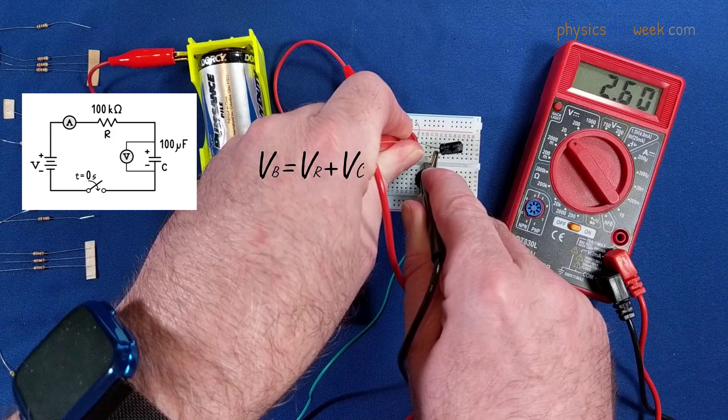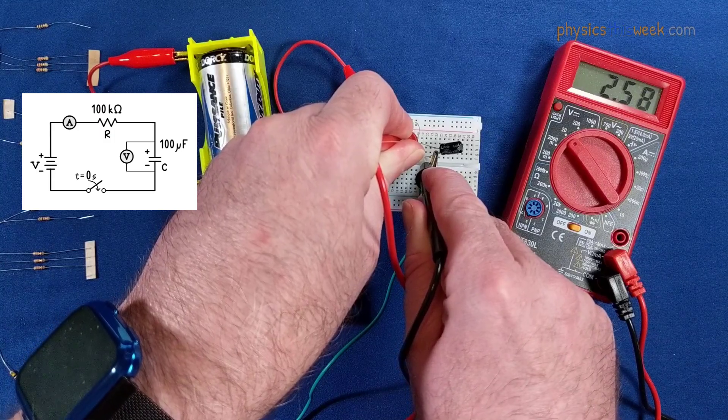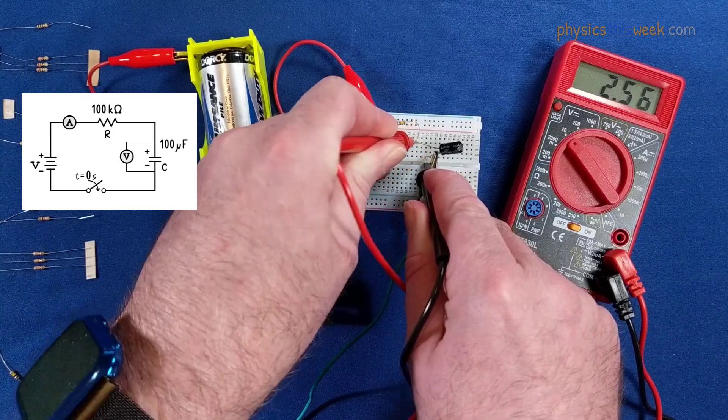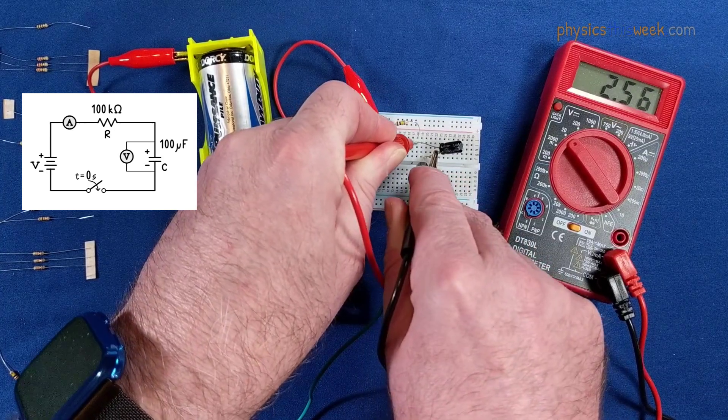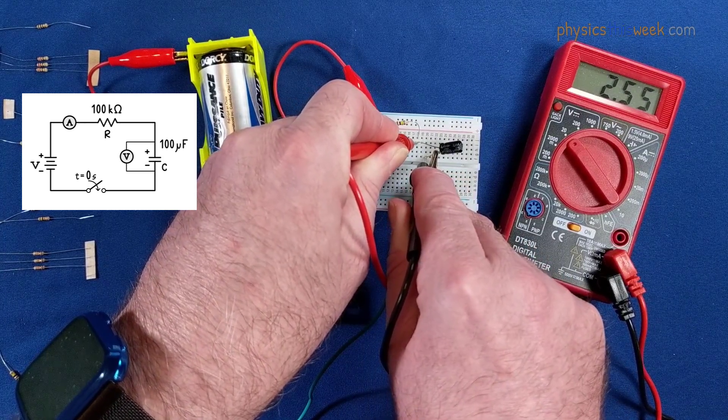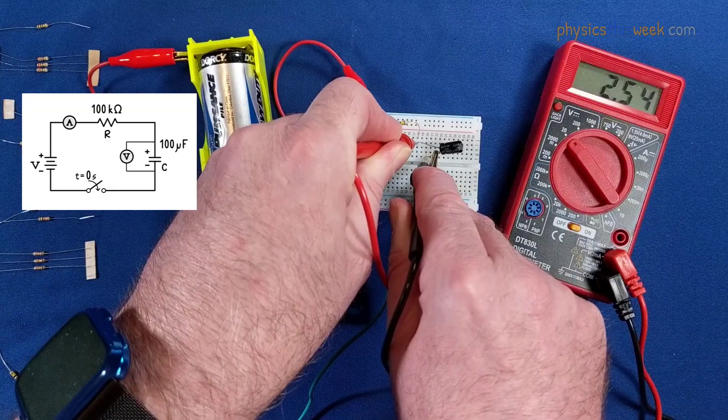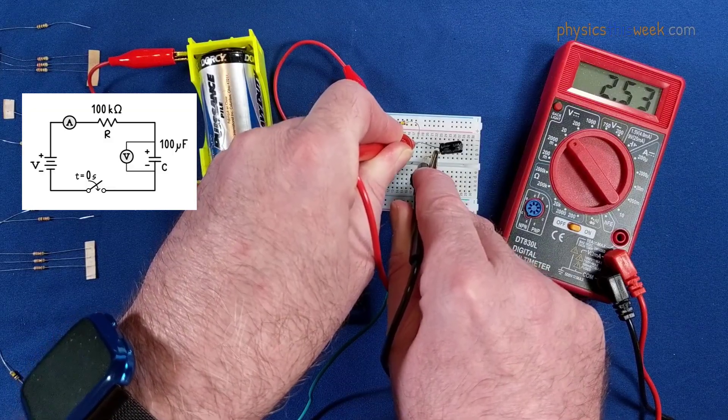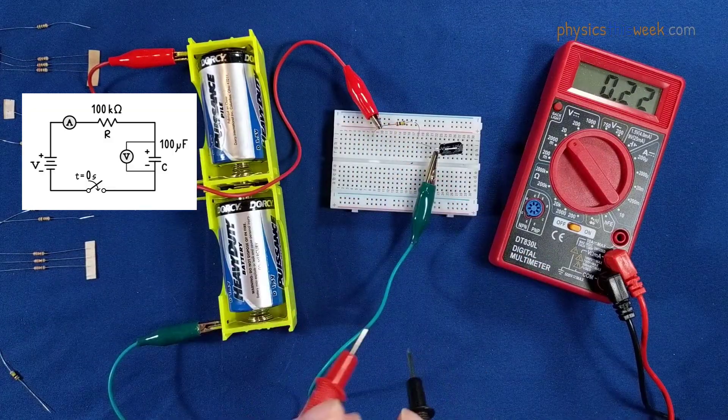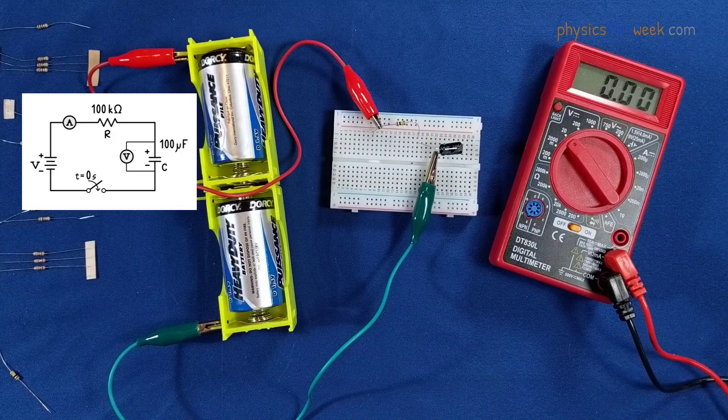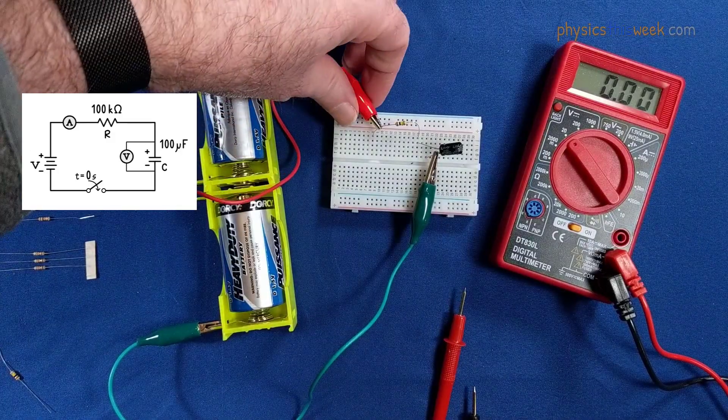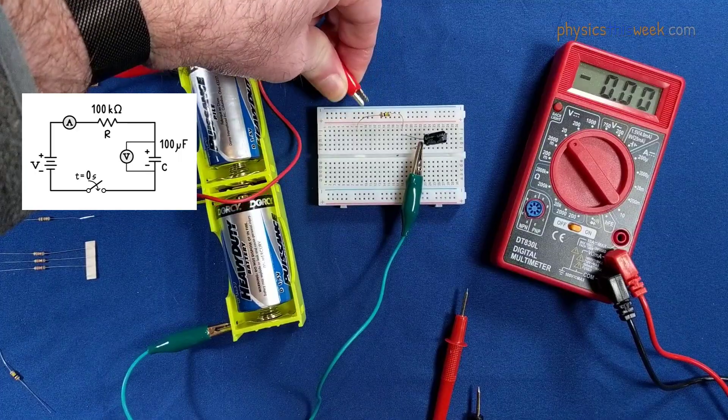You can see there, it's still climbing, well, mostly climbing. Now, one of the troubles here is the voltmeter actually has a resistance through it, and you can actually get it discharging the capacitor. But that's another topic. Okay, so that is the information for the charge up.